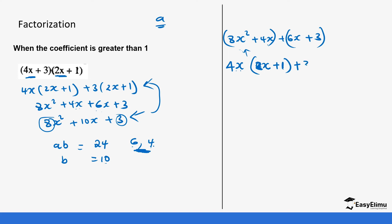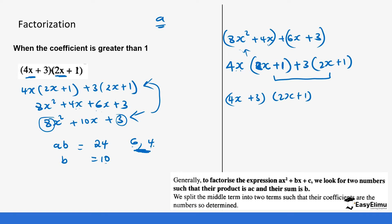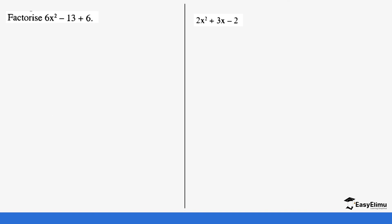What is common in the second group is 3, giving 3(2x + 1). You can see the two bracket values are the same — if yours are not similar, please check your work. So this becomes (4x + 3)(2x + 1). In general, to factorize ax² + bx + c, we find two numbers whose product is a×c and whose sum is b, then split the middle term — the process is the same whether the coefficient of x² is 1 or greater than 1.